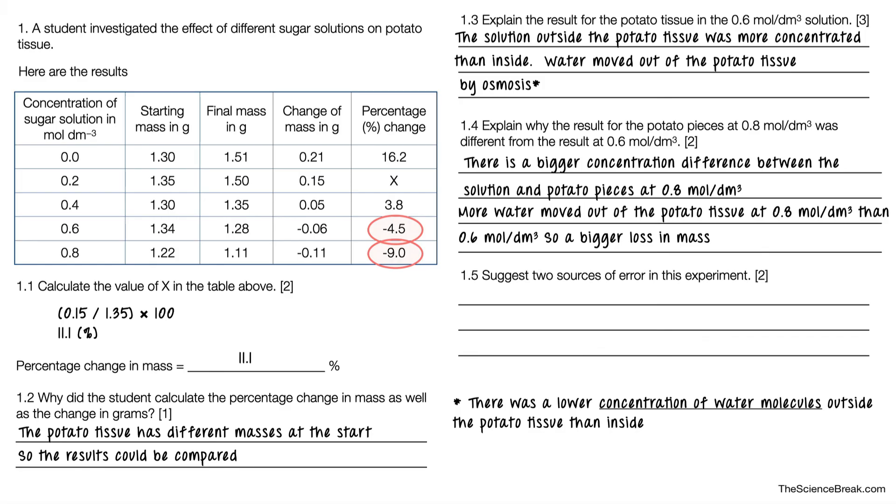Question 1.5 says suggest two sources of error in this experiment—two things that could cause an error in those results. We have the idea that the water may not have been wiped from the potato cylinders before weighing, which would affect the mass. We have the possibility of evaporation of water from the tubes, which might change the concentration. That will give us two possible sources of error. The ticks here indicate where the marks are for the different questions. Remember for question 1.5, there's three possible things you could say but a maximum of two marks.